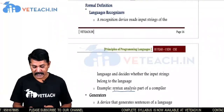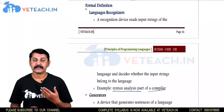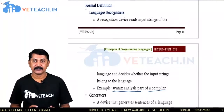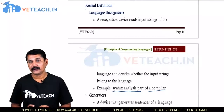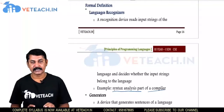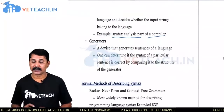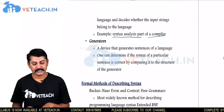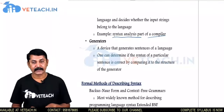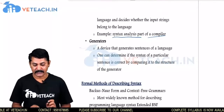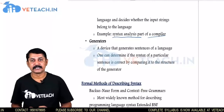For example, Syntax analysis is a part of a compiler — the same work is done there, analyzing whether the sentences used in the instruction belong to the language or not. The next one is generators — a device that generates the sentences of a language. One can determine if the syntax of a particular sentence is correct by comparing it to the structure of the generator.